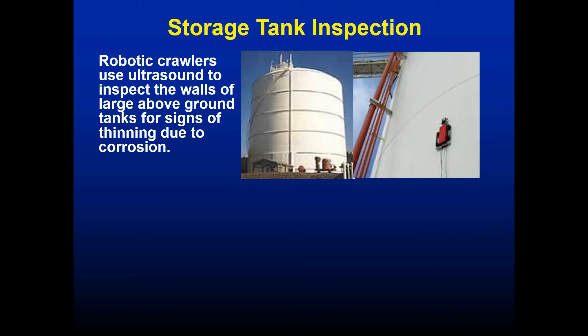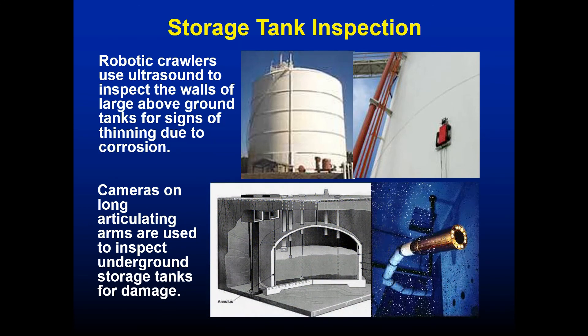Storage tanks — mostly petrochemical but also water storage — use above-ground storage tanks that are now commonly inspected using robotic crawlers. These crawlers drive along the exterior or interior of the tank taking ultrasound readings to look for wall thinning due to corrosion. For underground storage tanks, a giant borescope or cameras on articulating arms are lowered inside the tank for a visual inspection.